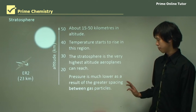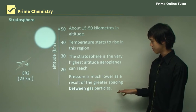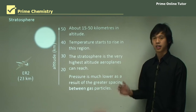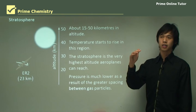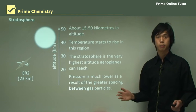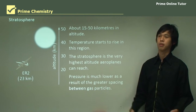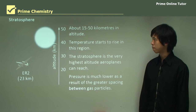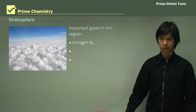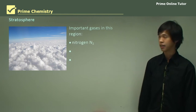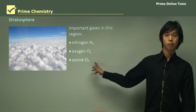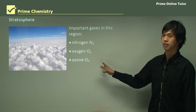The pressure in the stratosphere is less than in the troposphere because there is less mass above, and particles are more spaced out. The important gases in this region are nitrogen, which permeates all of the atmosphere, as well as oxygen — which is why jet engines can operate there — and ozone, which is a major constituent of the stratosphere and critically important for filtering radiation.